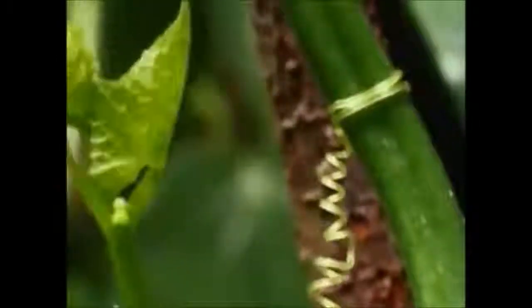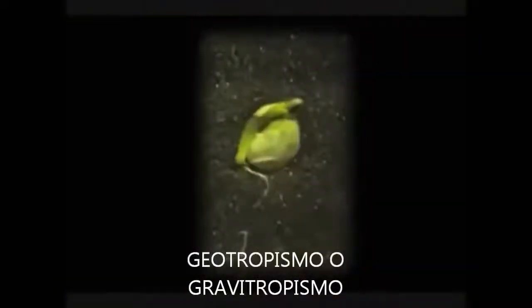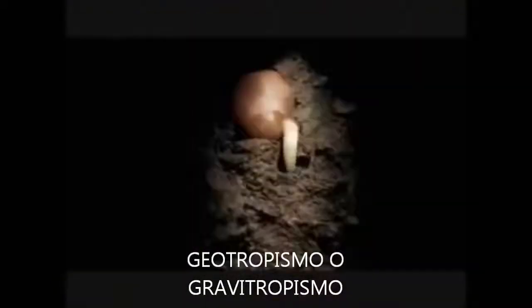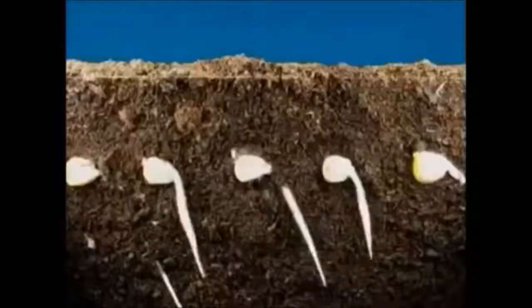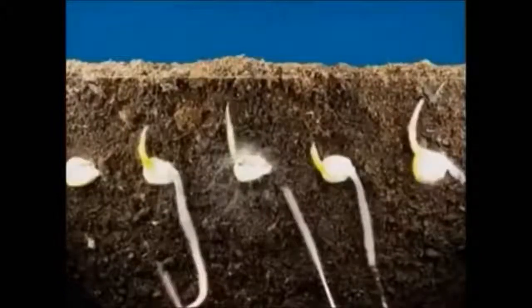El geotropismo o gravitropismo es la respuesta de un órgano vegetal a estímulos de tipo gravitatorio. Un ejemplo es el crecimiento de la raíz a favor de la fuerza de gravedad, que es un gravitropismo positivo. O bien del tallo en contra de la misma, que denominamos gravitropismo negativo.